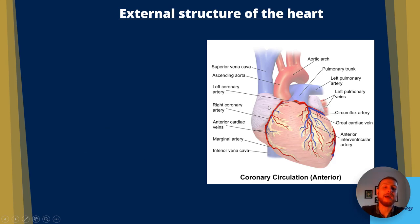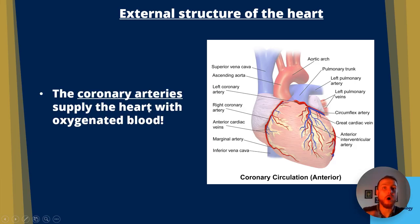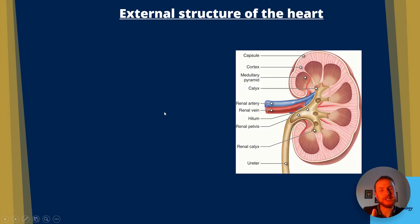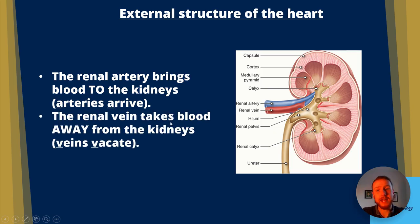Looking at the external structure of the heart: the aorta connects to the left ventricle; the vena cava connects to the right atrium; the pulmonary artery connects to the right ventricle; and the pulmonary veins connect to the left atria. You also need to know the right and left coronary arteries, which supply the heart itself with oxygenated blood and glucose — important because diseases can affect them. The renal artery brings blood to the kidneys; the renal vein takes blood away — a useful mnemonic: arteries arrive at organs, veins vacate.